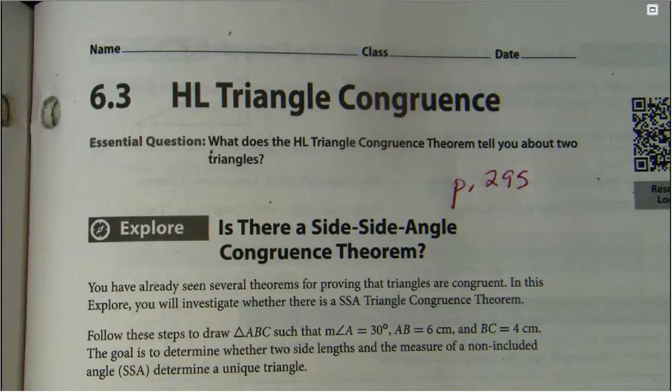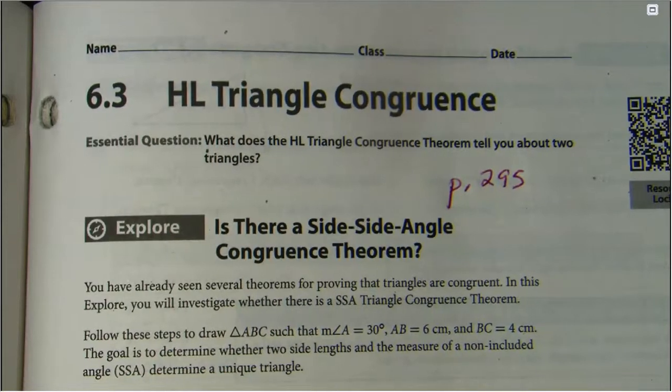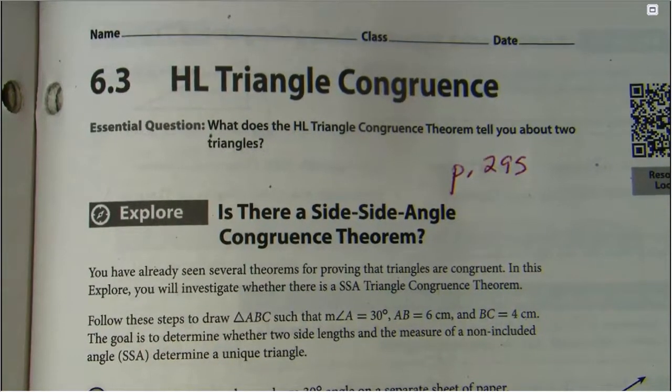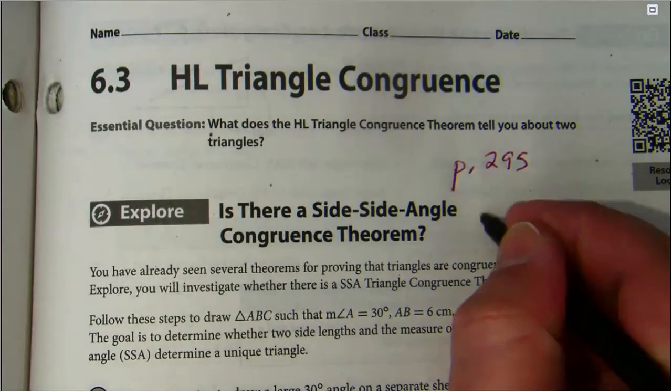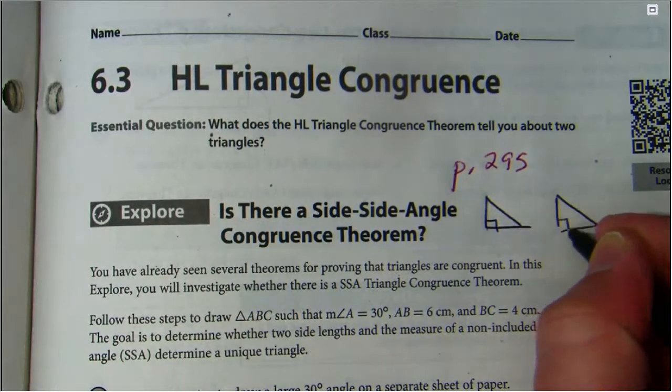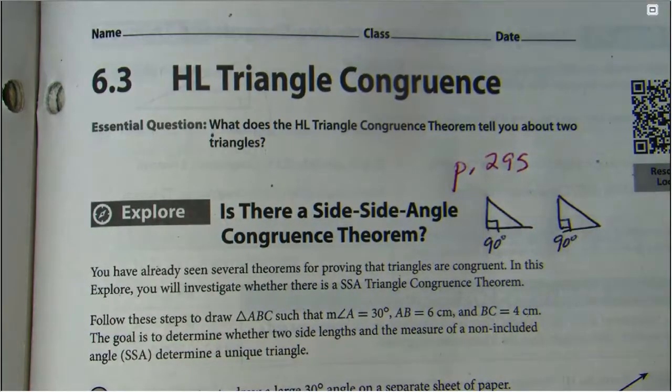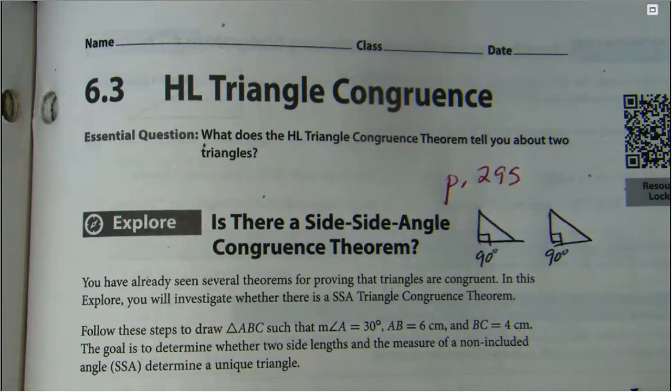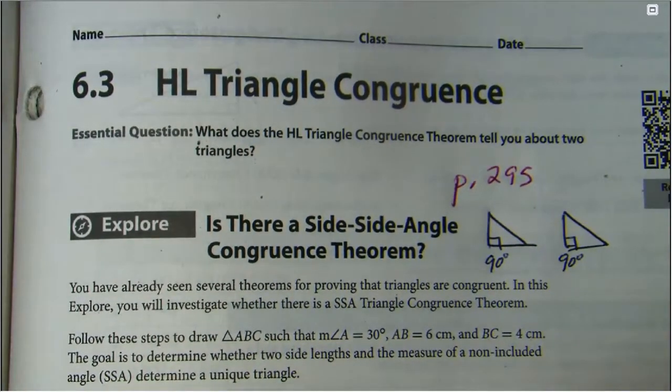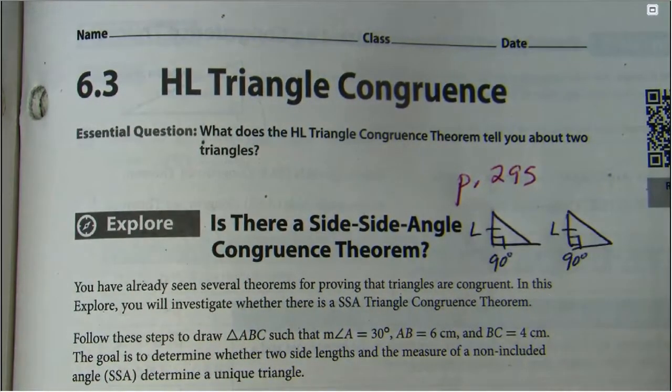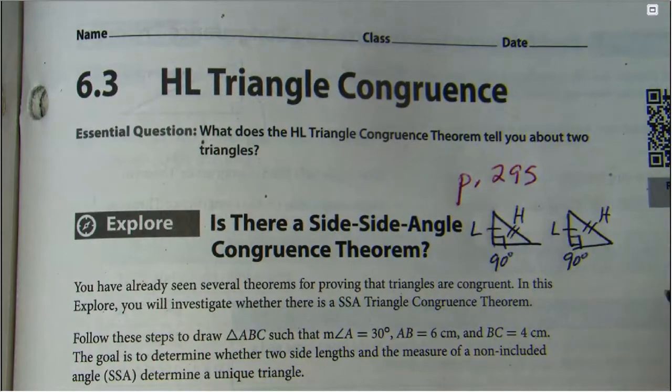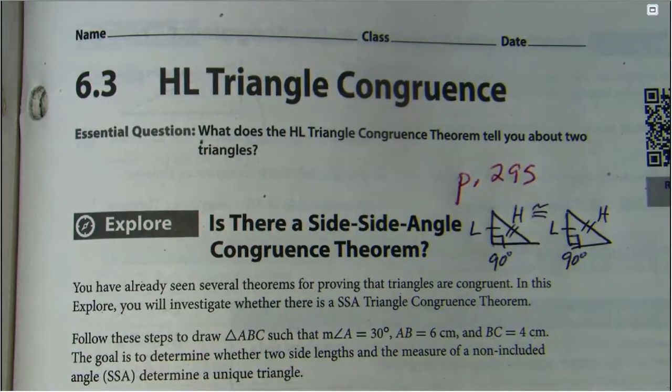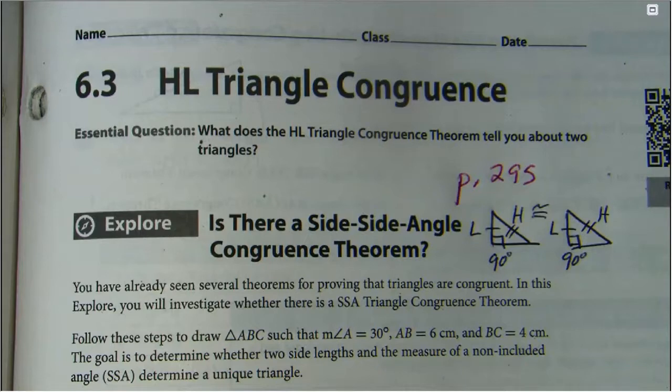All right, so HL triangle congruence. What does the HL triangle congruence theorem tell you about two triangles? Very much like the rest of the triangle theorems that we've learned, right? They're congruent. So basically, here's the quick picture: two right triangles, they got to be right, they got to be 90 degree angles. As long as a leg that's corresponding to another leg is congruent and their hypotenuses are both congruent to each other, there you go. These two triangles are congruent.